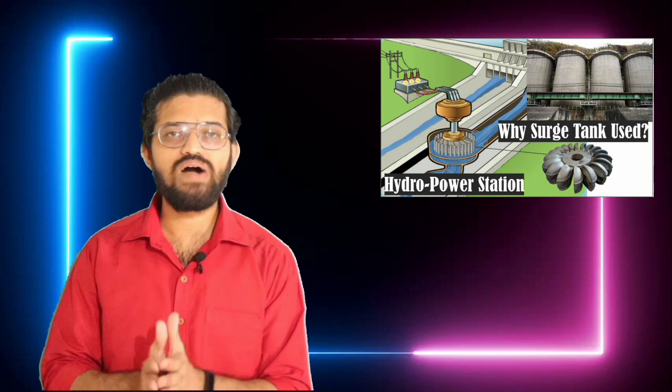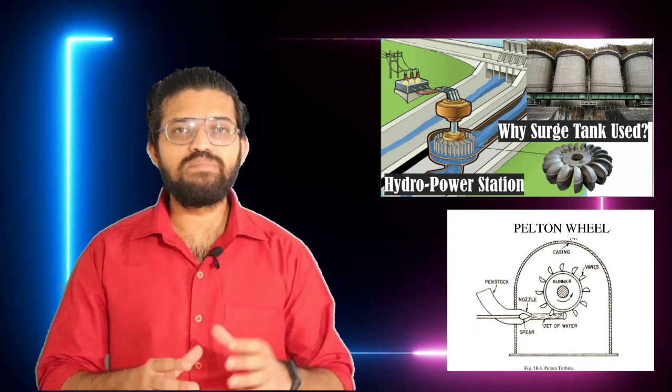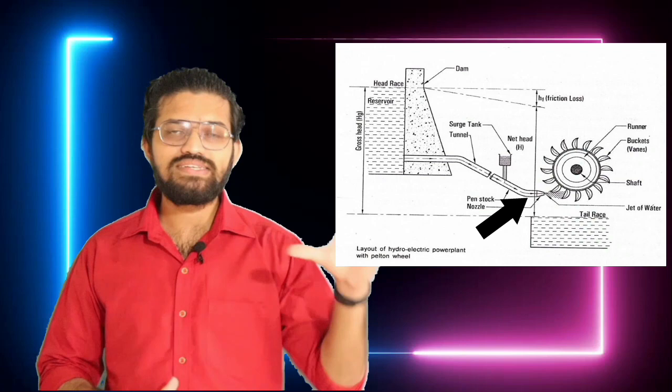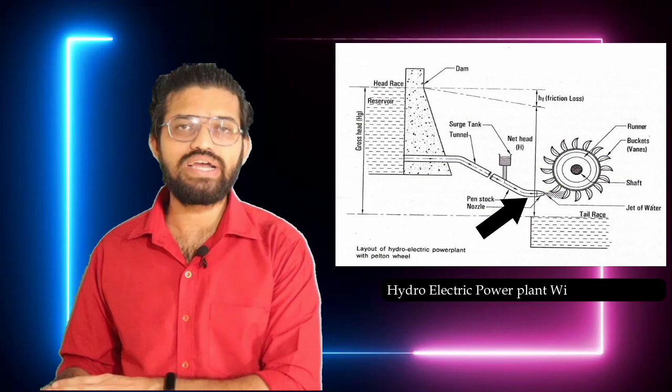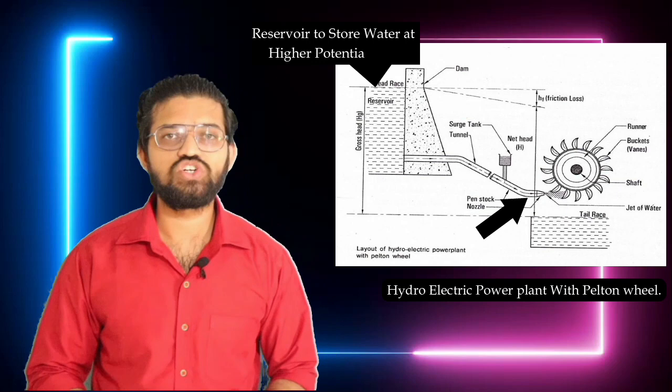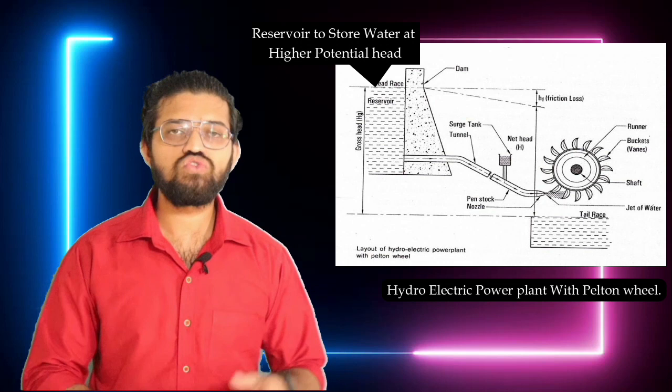The Pelton turbine is an impulse-type turbine, as discussed in the previous video on hydroelectric power plants. As you can see in this image, it is a representation of a hydroelectric power plant in which the Pelton wheel turbine is used. There is a reservoir where water is stored at a higher elevation — that is, at a higher potential head.